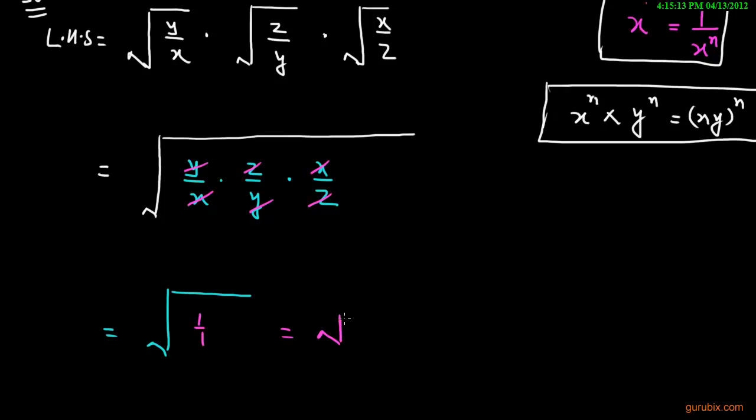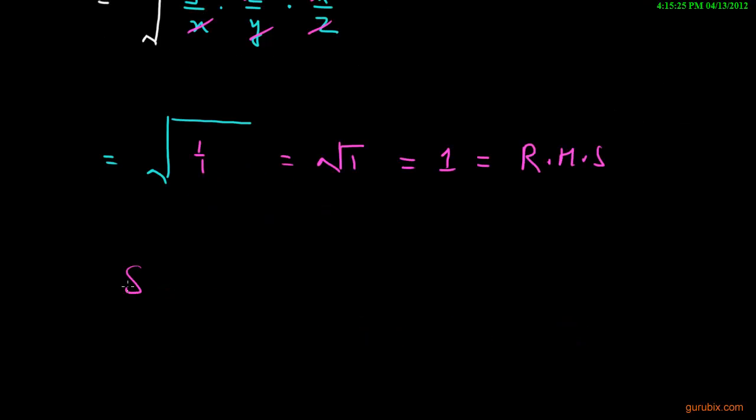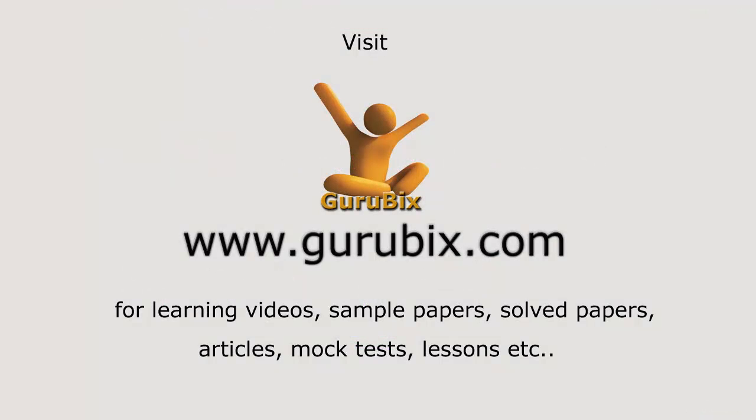This means root 1 and root 1 is equal to 1. And this value is equal to right hand side. So it is proved. Thank you.